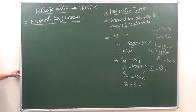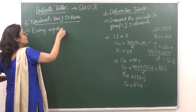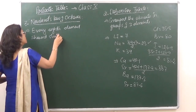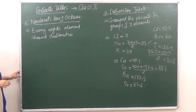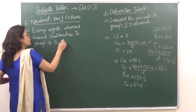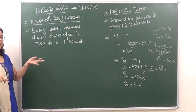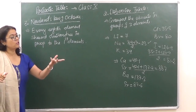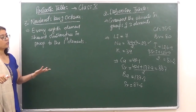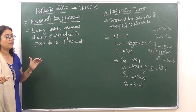Octaves means eight. According to this law, every eighth element showed similarities in properties to the first element — just like the notes of music. In Indian music we have sa, re, ga, ma, pa, dha, ni, and sa — the first and the eighth are both sa. Similarly in English music notes: do, re, mi, fa, sol, la, ti, do — the first and eighth have the same note. So similarly, the first element and the eighth element had similar properties.